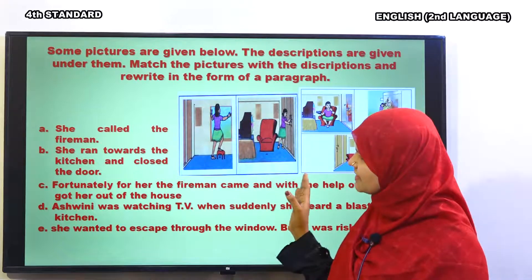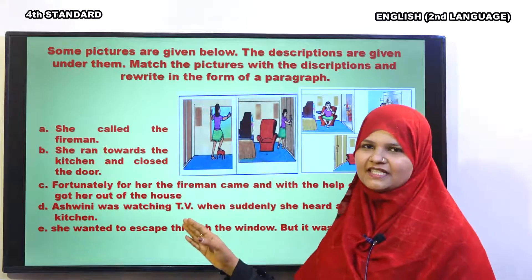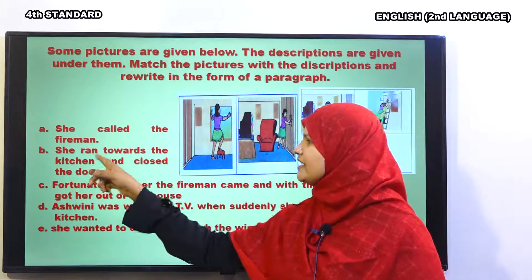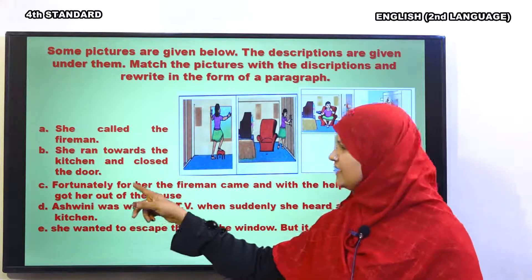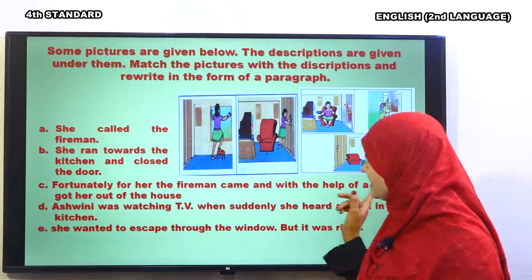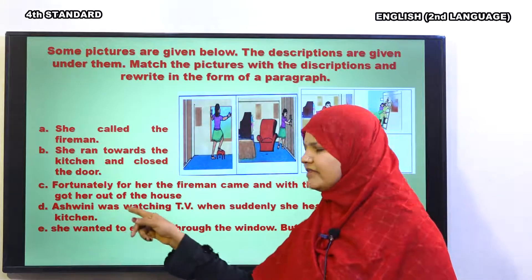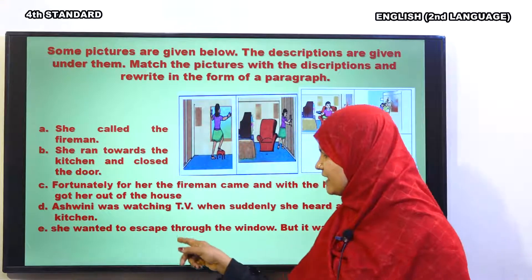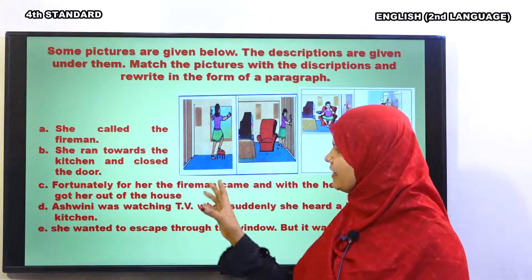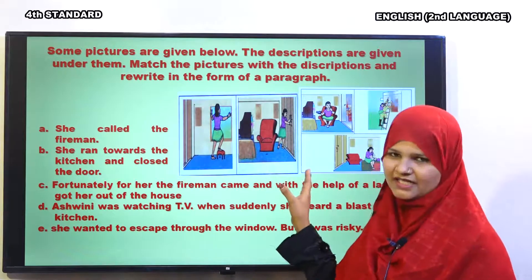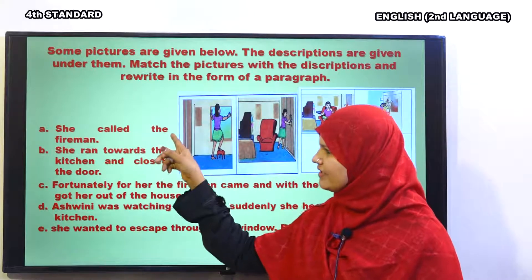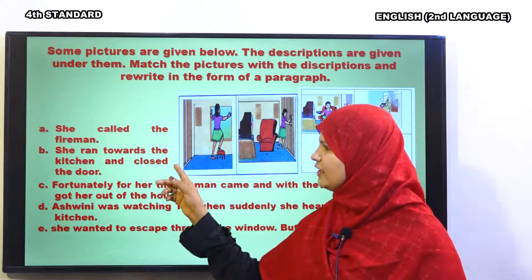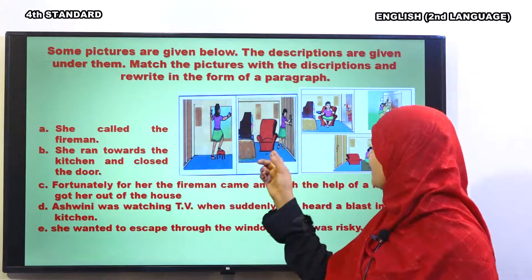Here are some pictures and some statements. We have to match these sentences with the pictures. The sentences are: she called the fireman; she ran towards the kitchen and closed the door; fortunately for her, the fireman came and with the help of a ladder, got her out of the house; Ashwini was watching TV when suddenly she heard a blast in the kitchen; she wanted to escape through the window, but it was risky.